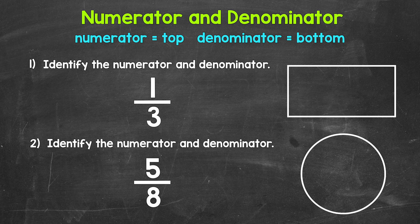Well, let's start with the numerator. That's the top number. So this 1 right here is our numerator. The bottom number is the denominator. So 3 is our denominator here.